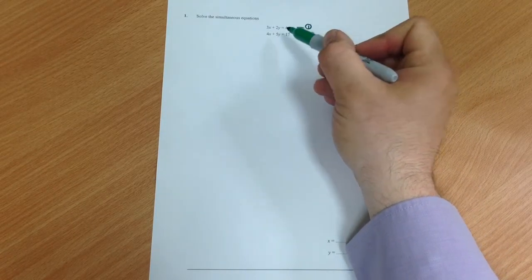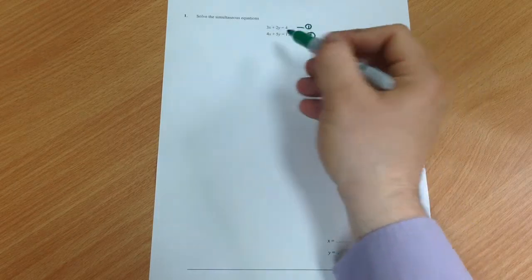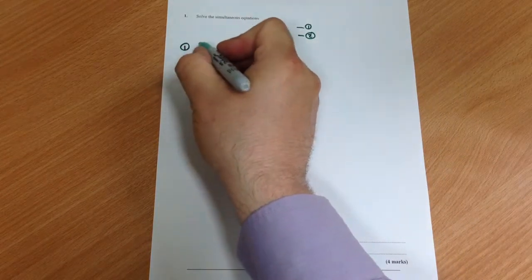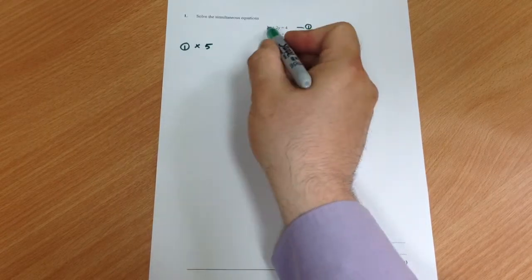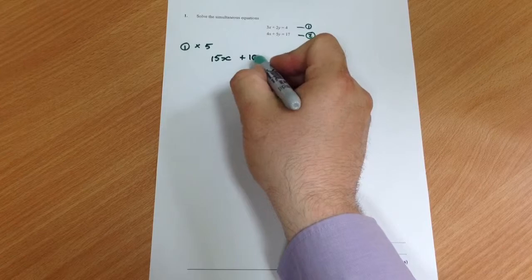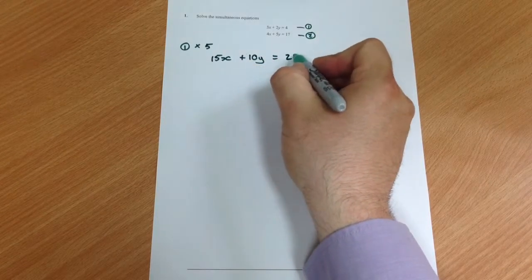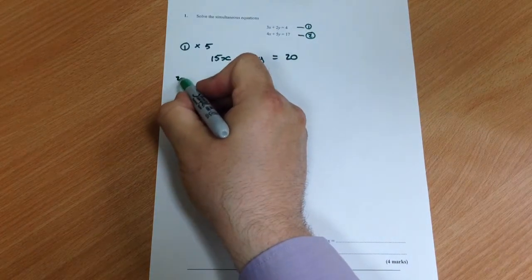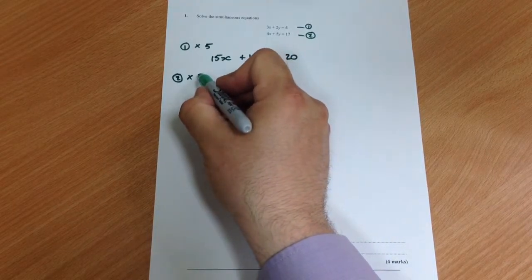So we're going to times equation 1 by 5 which gives us 15x plus 10y equals 20, and we're going to multiply equation 2 by 2 which gives us 8x plus 10y equals 34.